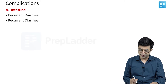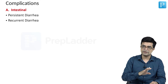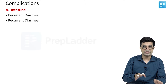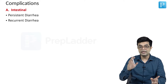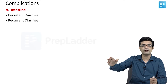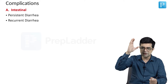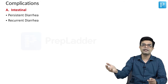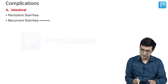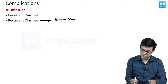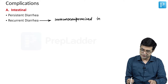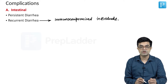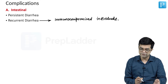Second is recurrent diarrhea. Recurrent diarrhea is diarrhea getting passive for a few days, then again developing loose stools. In persistent diarrhea, it will continue for 14 days or longer. In recurrent, there will be a period of remission and then it will start again. Recurrent diarrhea is usually seen in immunocompromised individuals; it is very rare in immunocompetent, adequately nourished children.